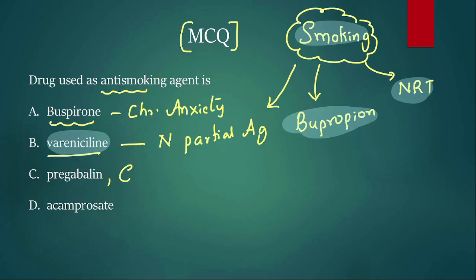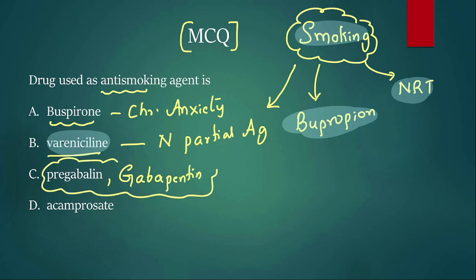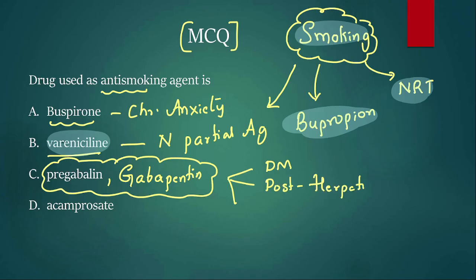Other options include pregabalin and its related drug gabapentin. Pregabalin and gabapentin are used in neuropathic pains — diabetic neuropathy, post-herpetic neuralgia. They are also the drug of choice for restless leg syndrome, as per a recent update.